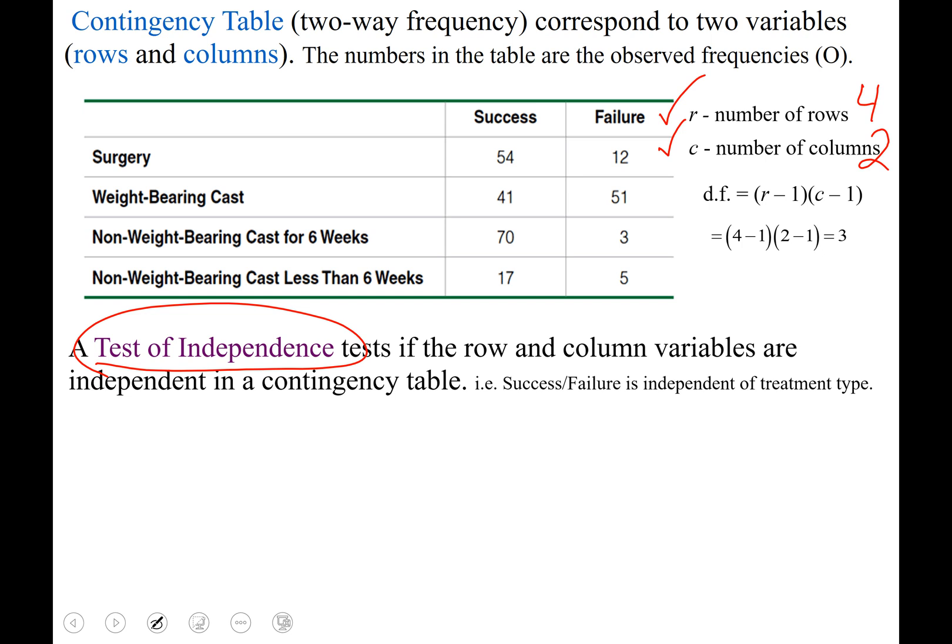So for example, were these 54 successes dependent on surgery? Were these 12 failures dependent on that treatment type? Okay, test for independence it's called.